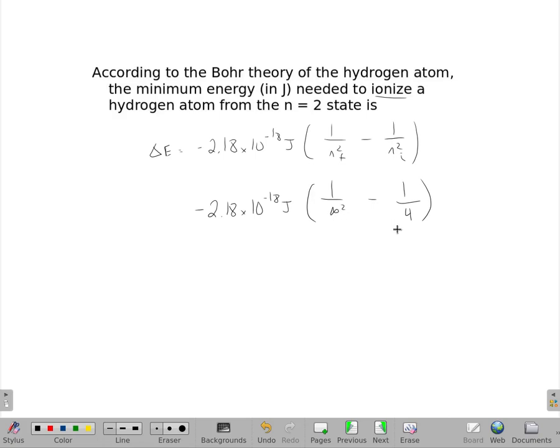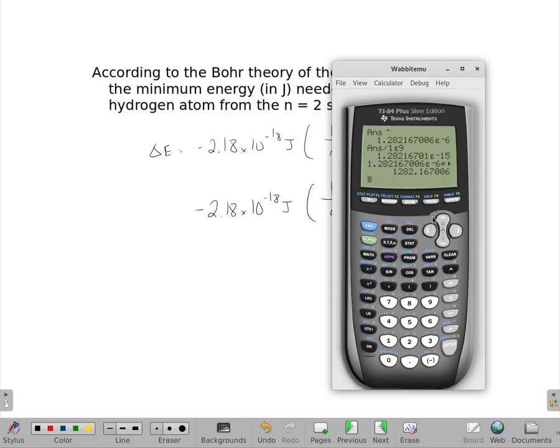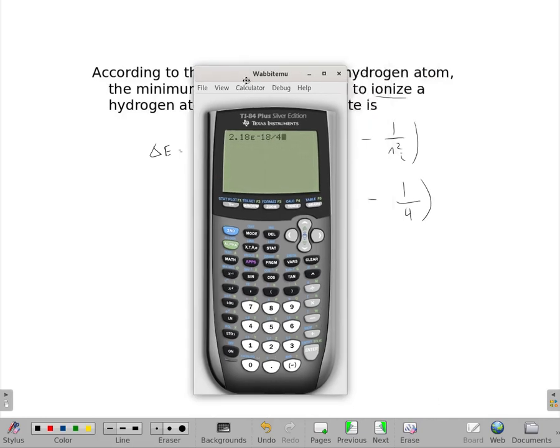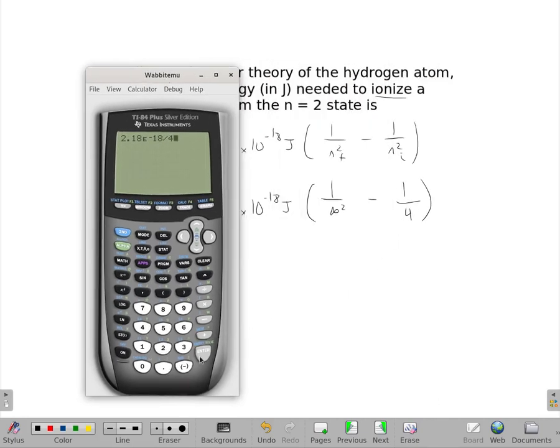So it turns out, this calculation, the only thing I have to do is take that 2.18 times 10 to the negative 18th, and divide it by 4, or multiply by 1 fourth. And I get that the answer is 5.45 times 10 to the negative 19th.